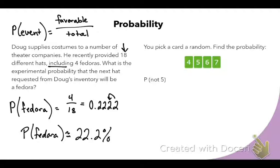You're just calculating favorable out of total. Let's look at the next problem. It says you pick a card at random, find the probability. How many cards are not a five? There are three cards that are not a five. How many cards total are there? Four. The total number goes in the denominator, and then the favorable outcomes. So how many cards are not a five? Three, and that's 75%.